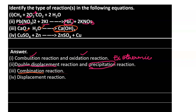The last reaction is a displacement reaction: zinc, being a more reactive metal, is able to displace copper from copper sulfate solution. The blue color of copper sulfate changes to the white color of zinc sulfate, confirming that the less reactive metal (copper) has been displaced by the more reactive metal (zinc).